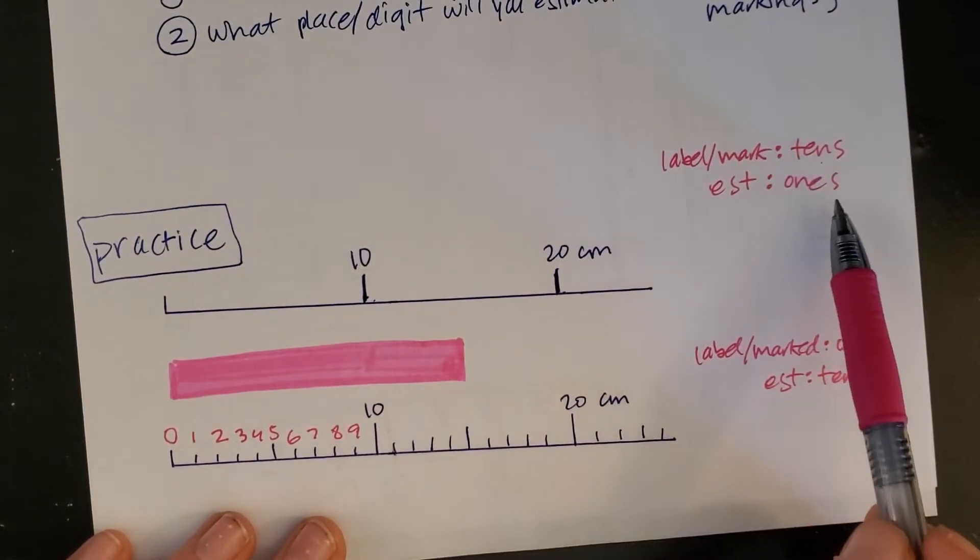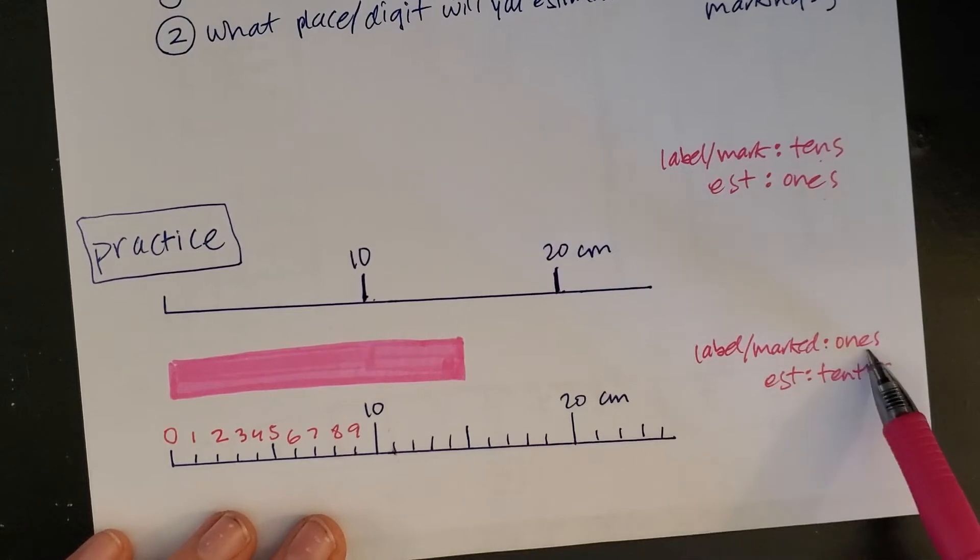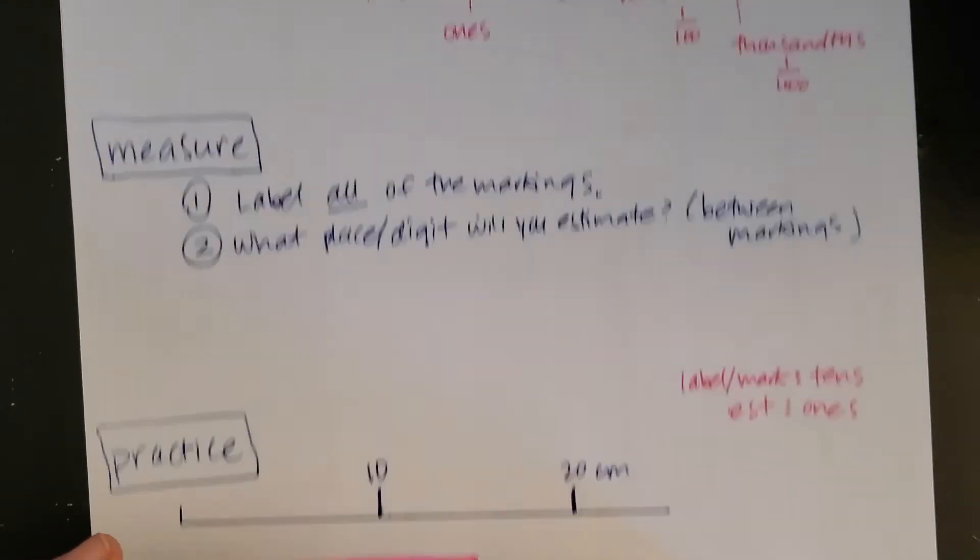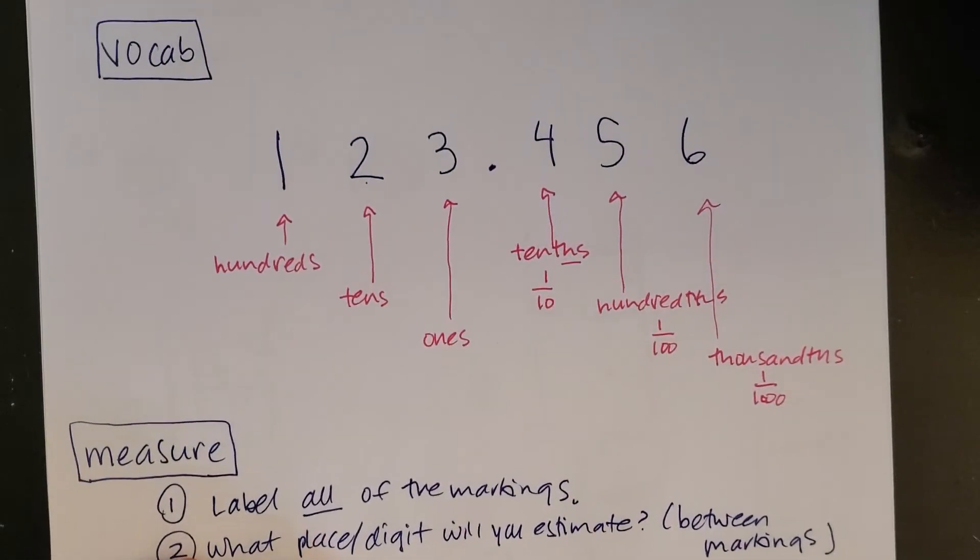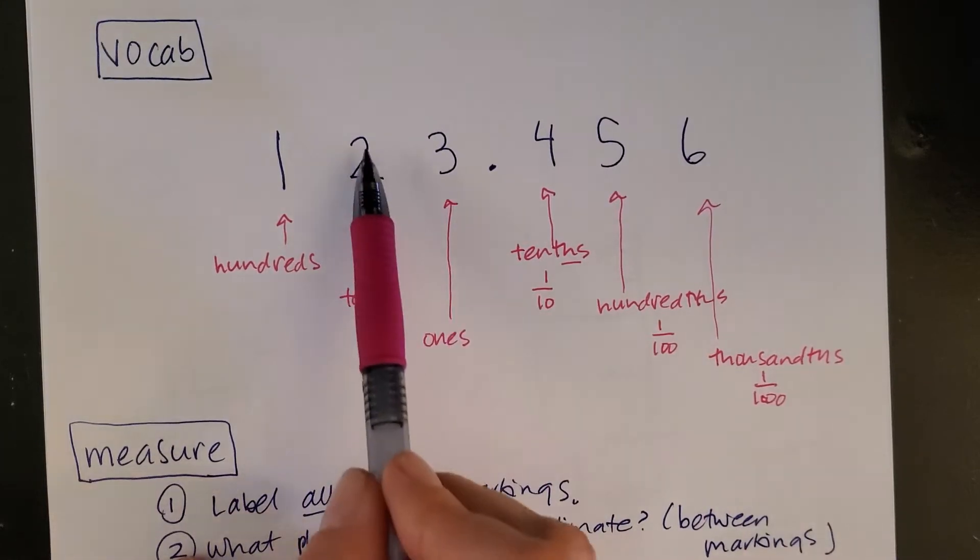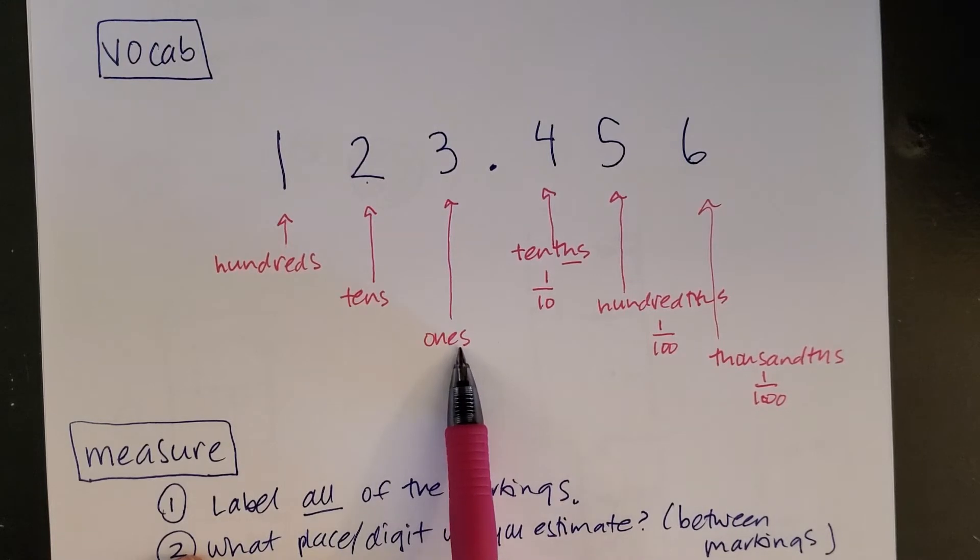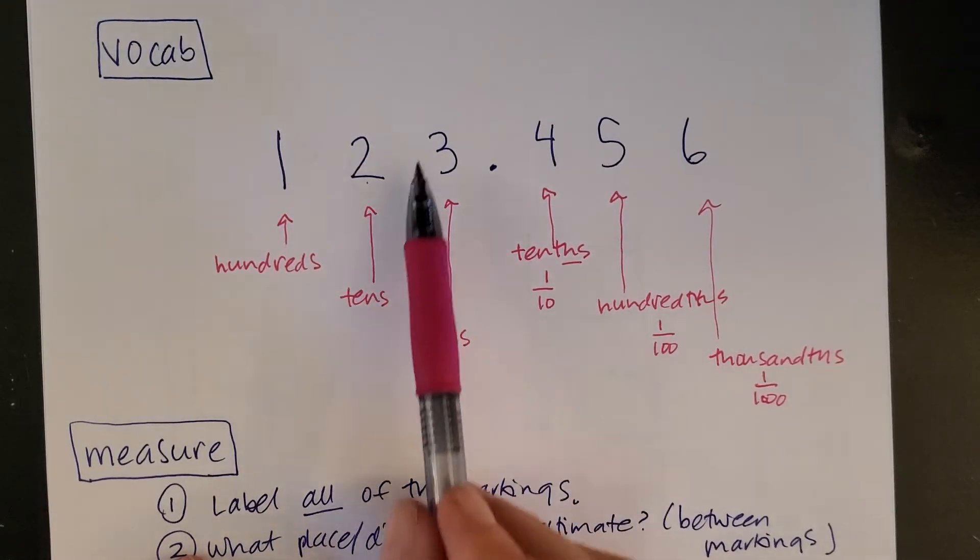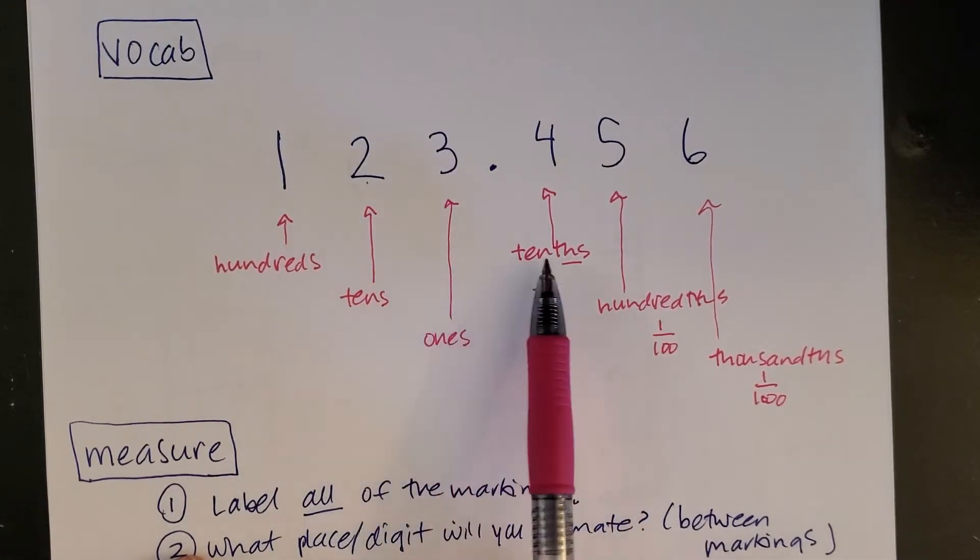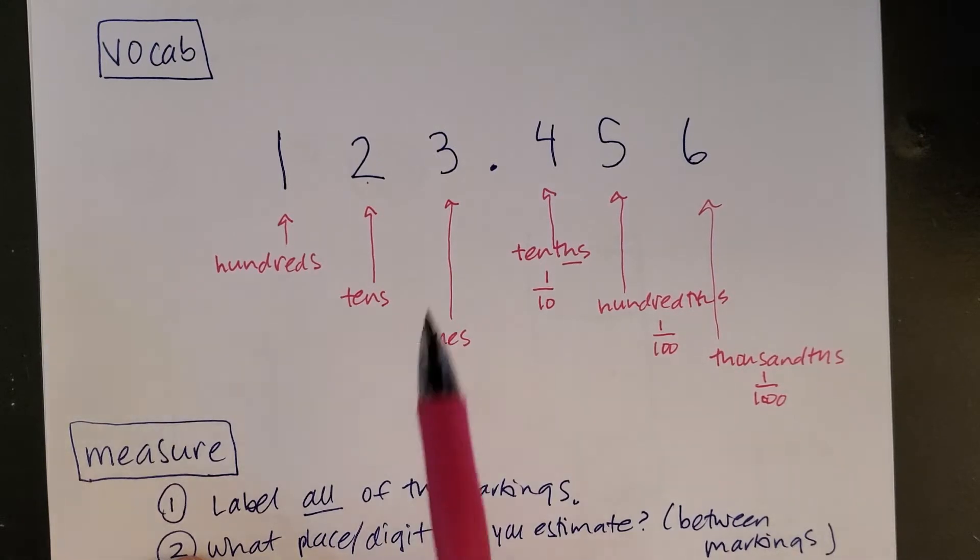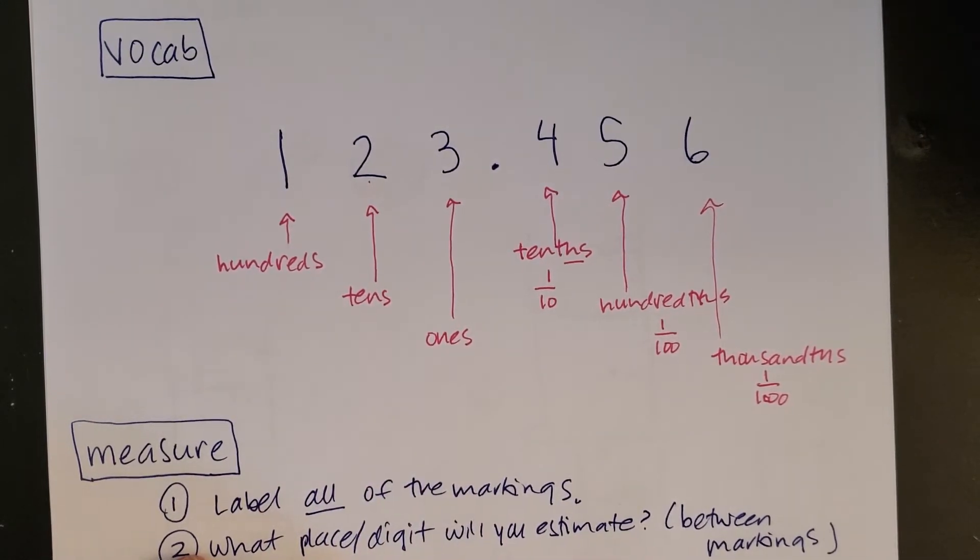Now notice here, if the tens are marked, you estimate the ones. If the ones are marked, you estimate the tenths. Come up here and look at our places that we talked about. If the tens are marked, we estimate one place over, which is the ones. If the ones are marked, then we estimate one place over, which is the tenths. And essentially what that's giving us is a 10% estimate. You can never estimate more than one place over, but you should always estimate one place over when you're working on a measurement.